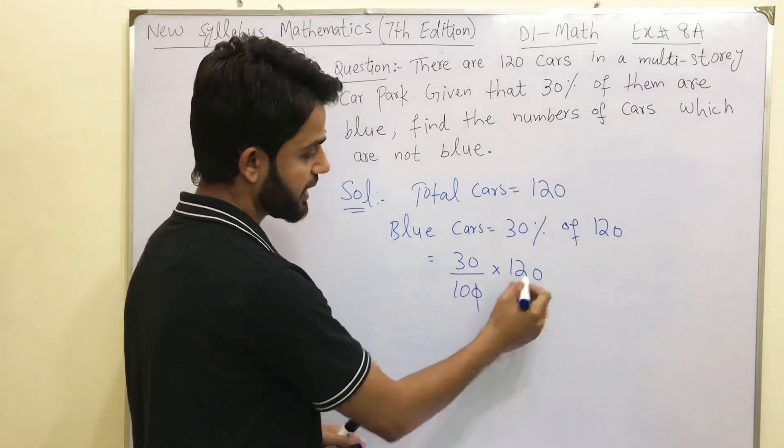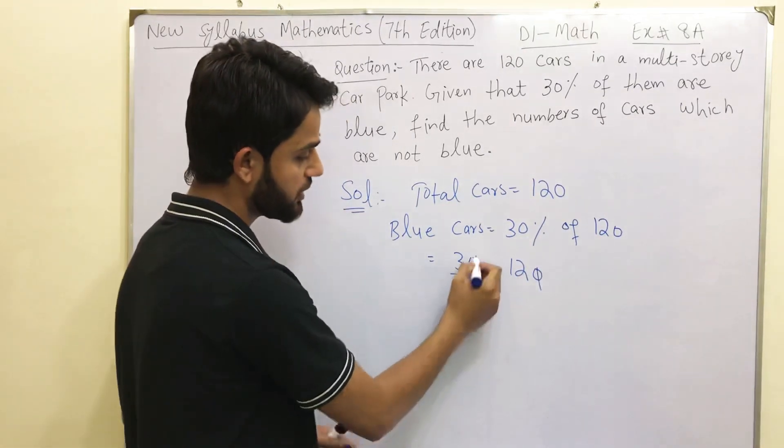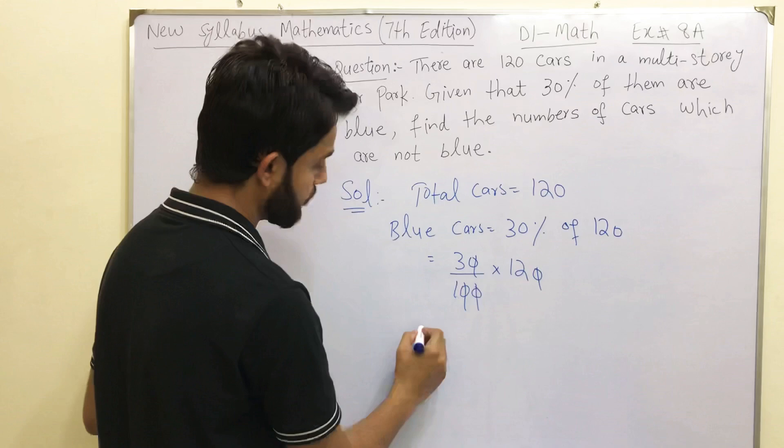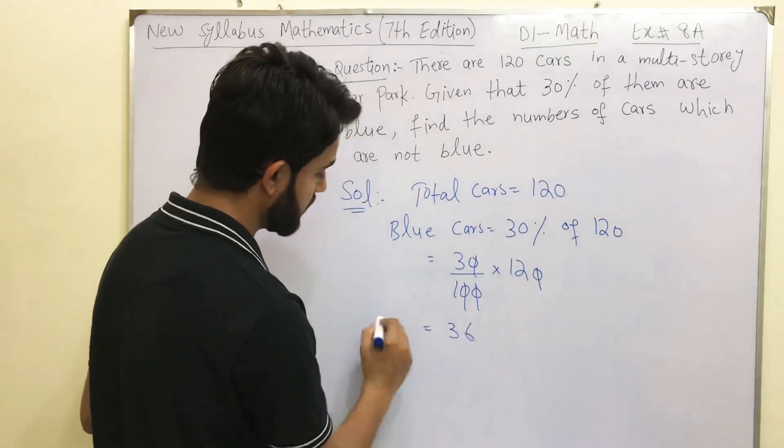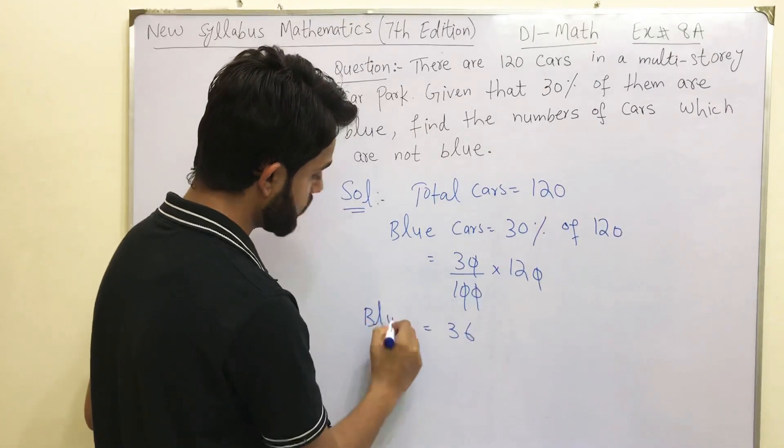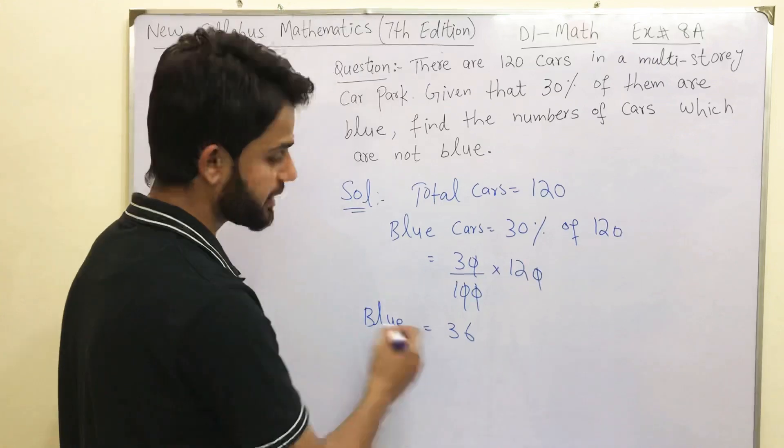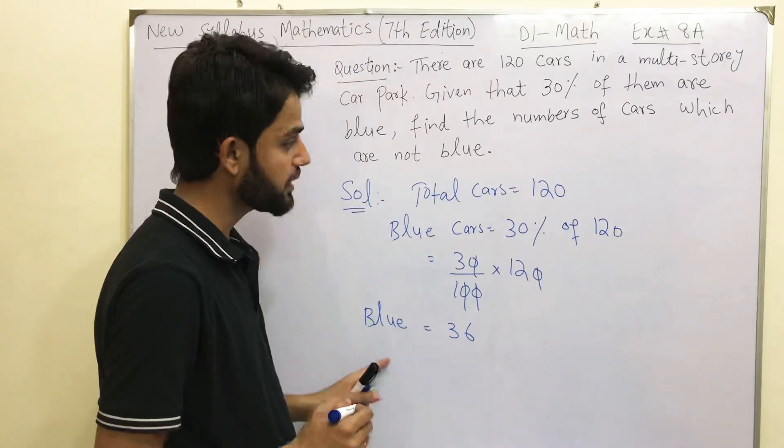So this 0 will cancel with this 0, this 0 with this 0, and 12 times 3 will give you 36. So we just found that how many cars are there blue? 36 cars are blue.